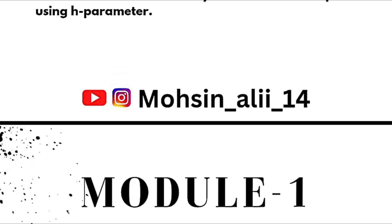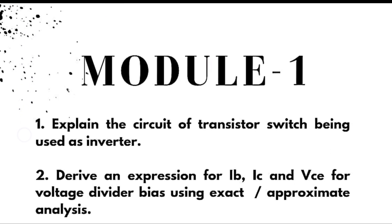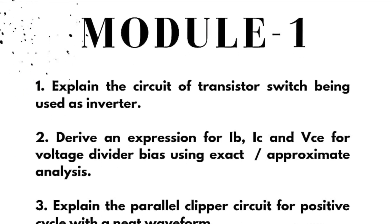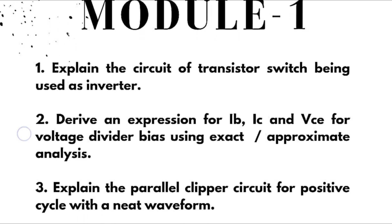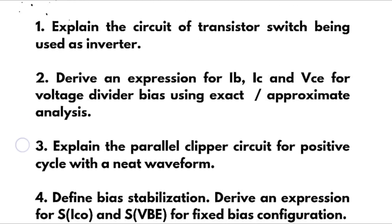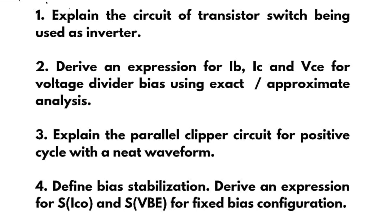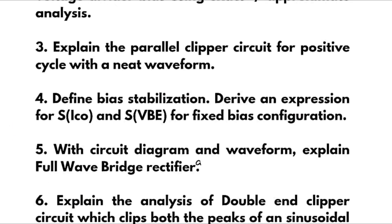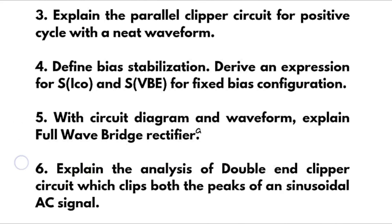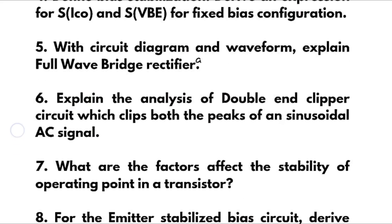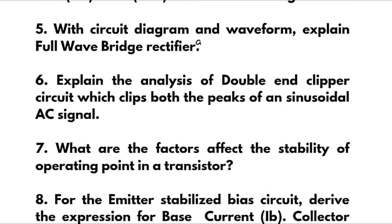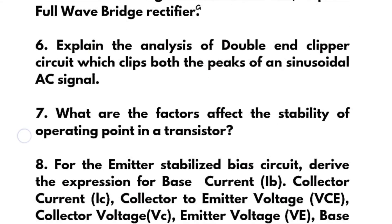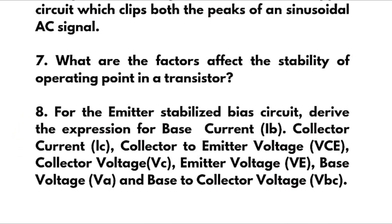Coming to module 1: explain the circuit of a transistor being used as an inverter and derive an expression for IB, IC, and VCE for voltage divider bias using exact or approximate analysis. Explain the parallel clipper circuit for the positive cycle with a neat waveform. Define bias stabilization and derive the expression for S(ICO) and S(VBE) for fixed bias configuration with circuit diagram and waveform. Explain the full bridge rectifier. Explain the analysis of a double clipper circuit which clips both peaks of a sinusoidal AC signal. What are the factors that affect the stability of the operating point in a transistor?